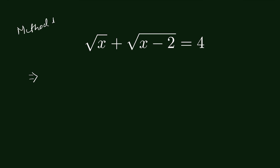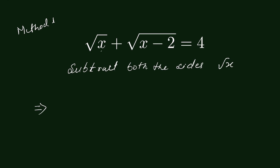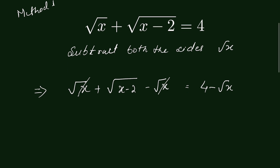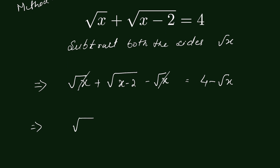Let's subtract square root of x from both sides — or simply send square root of x to the right hand side. Since it's positive, it will become negative square root of x. This is called balancing the equation: we subtract both sides by the same number. So square root of x minus 2 is equal to 4 minus square root of x.